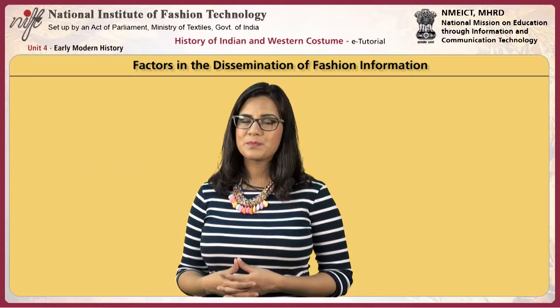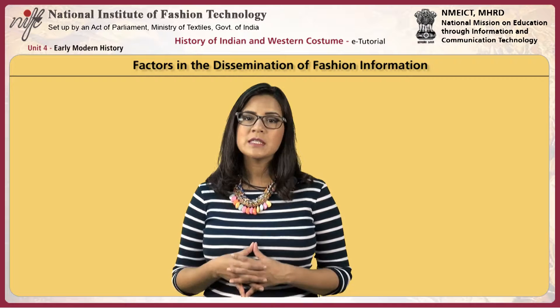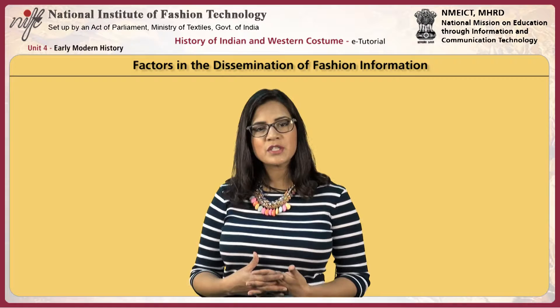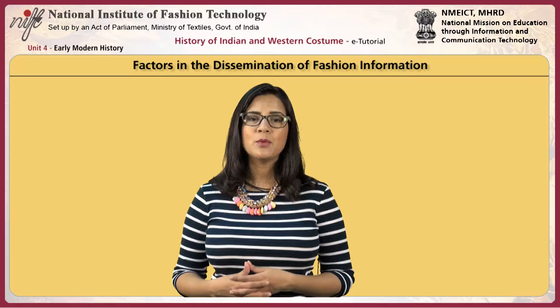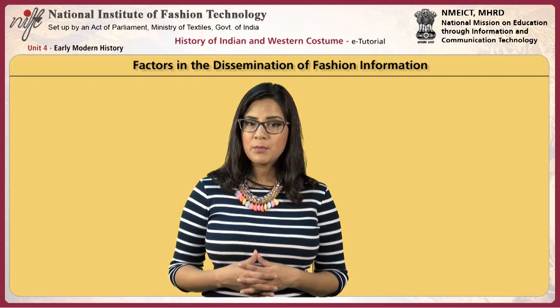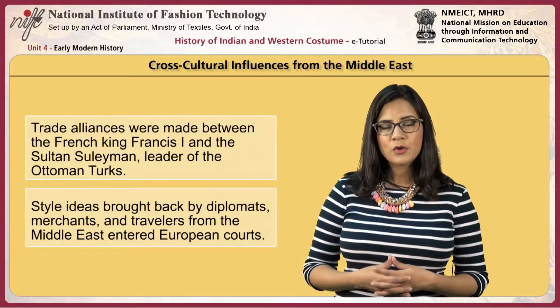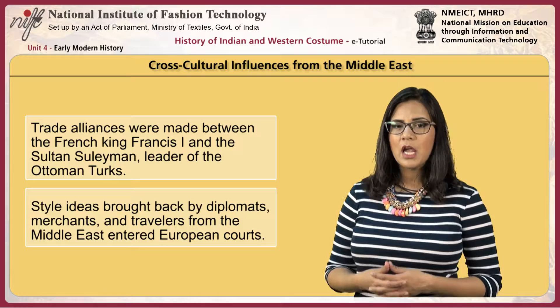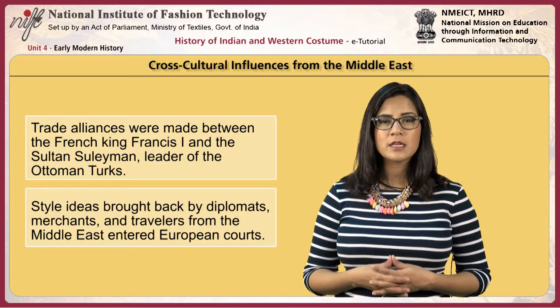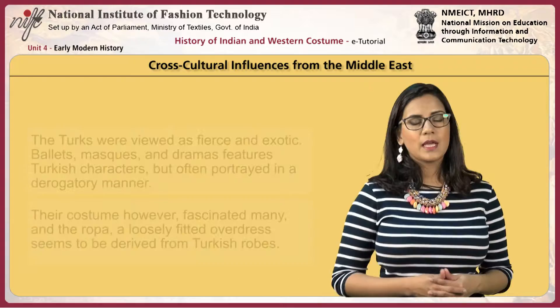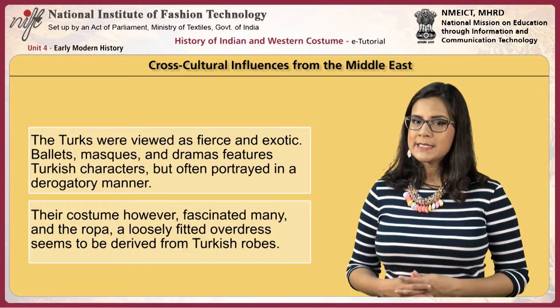The main factors in the dissemination of fashion information was the intermarriage of the royal families from different countries. The brides were equipped with not just a substantial dowry, but also a trousseau of the latest fashions and accompanied by a group of fashionably dressed ladies in waiting. Other sources of fashion information included imported garments and fabrics, books dealing with costume, and travelers who brought back information about examples of foreign styles. Cross-cultural influences from the Middle East also had an effect on this period. Trade alliances were made between the French King Francis I and the Sultan Suleiman, leader of the Ottoman Turks. Style ideas brought back by diplomats, merchants and travelers from the Middle East entered European courts. The Turks were viewed as fierce and exotic. Ballets, masks and dramas featured Turkish characters, but often portrayed in a derogatory manner.